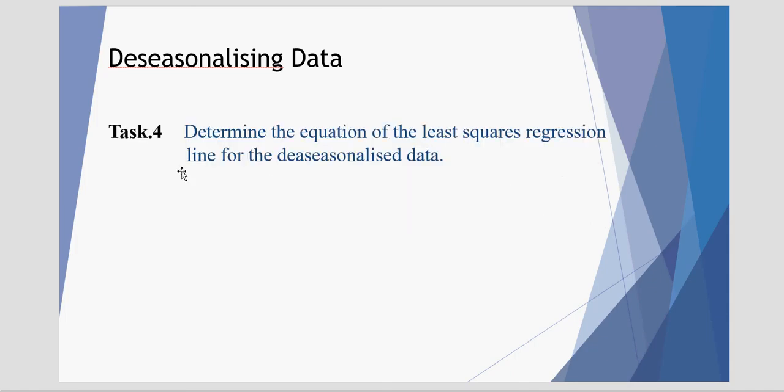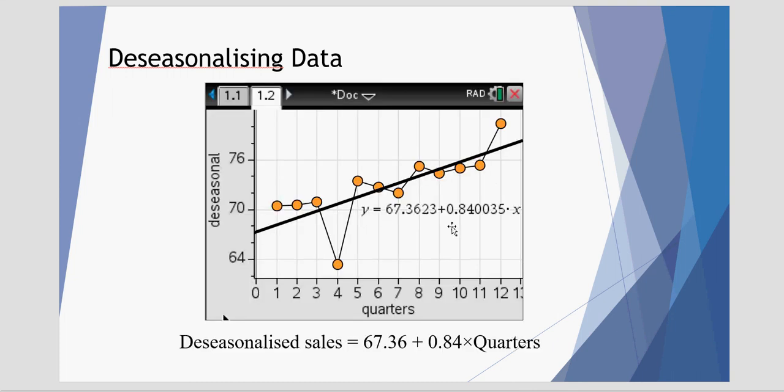In effect, the next task was to determine the equation of the least-squared regression line for the deseasonalized data. That's what we just discovered. The deseasonalized sales would be equal to 67.36 plus 0.84 times the time code or the quarters.